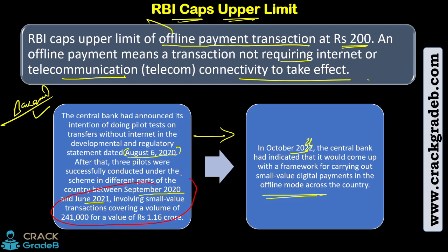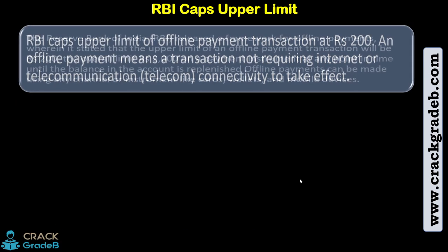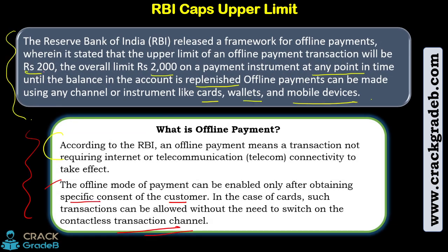Key MCQ points: RBI conducted three pilot programs. The developmental and regulatory statement was on August 6, 2020. In October 2021, the Central Bank came up with the framework indication. The overall limit is Rs 2000 and the upper limit per transaction is Rs 200.